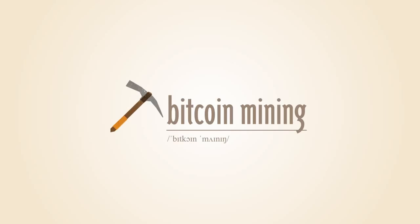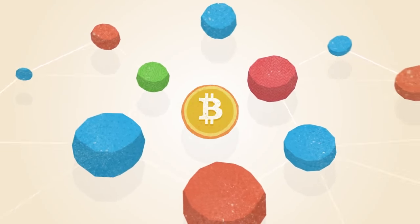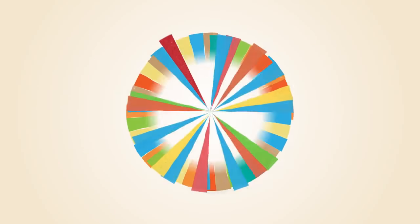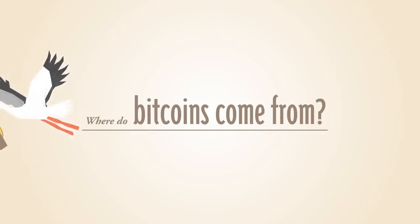What is Bitcoin mining? Bitcoin operates as a peer-to-peer network. This means that everyone who uses Bitcoin is a tiny fraction of the bank of Bitcoin. But where do Bitcoins come from?